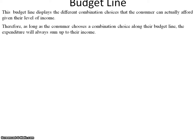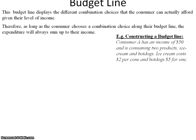The budget line displays the different combination choices that the consumer can actually afford given their level of income. It depicts what combination choices are available for the consumer to choose based upon their income. Therefore, as long as the consumer chooses a combination along their budget line, the expenditure will always sum up to their income.